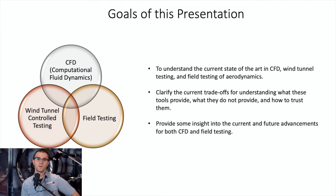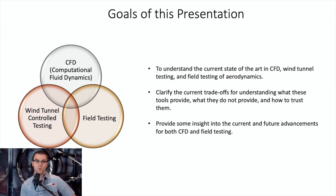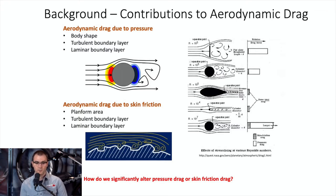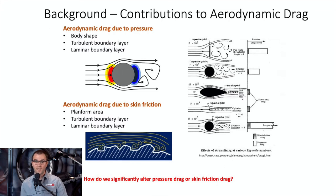We need to talk about background contributions to aerodynamic drag. These include aerodynamic drag due to pressure, which is more of a body shape and body forming aspect, and aerodynamic drag due to skin friction. Pressure drag is the major contribution for bluff bodies — the amount of pressure drag is dictated by the shape of the body and whether the boundary layer is laminar or turbulent. Skin friction is related to friction at the surface in the direction of fluid motion, dependent on surface area and boundary layer state.